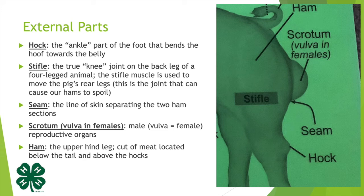The stifle muscle is used to move the pig's rear legs. This is the joint that can cause our hams to spoil because it's so deep into the ham. That's why we have to trim around the hock so that we can get the cure down in there, and it can penetrate all the way to the stifle joint and the stifle muscle.